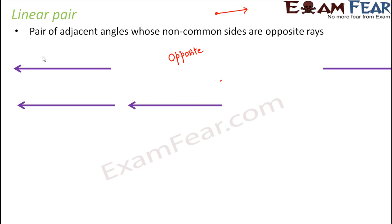Now let us understand the definition of linear pair. Linear pair angles are two angles which are adjacent — meaning located side by side, satisfying all the criteria to become adjacent — and at the same time, their non-common sides are opposite rays.